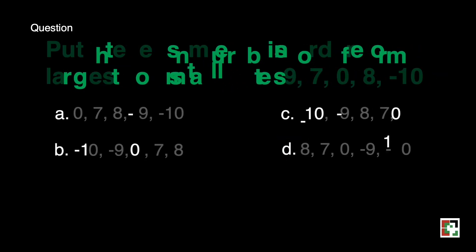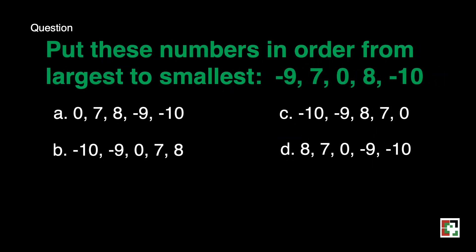Next question. Put these numbers in order from largest to smallest: negative 9, 7, 0, 8, negative 10. Is it A? Is it B? Is it C? Or D? Our answer is letter D. That's 8, next is 7, next is 0, next is negative 9 and negative 10.